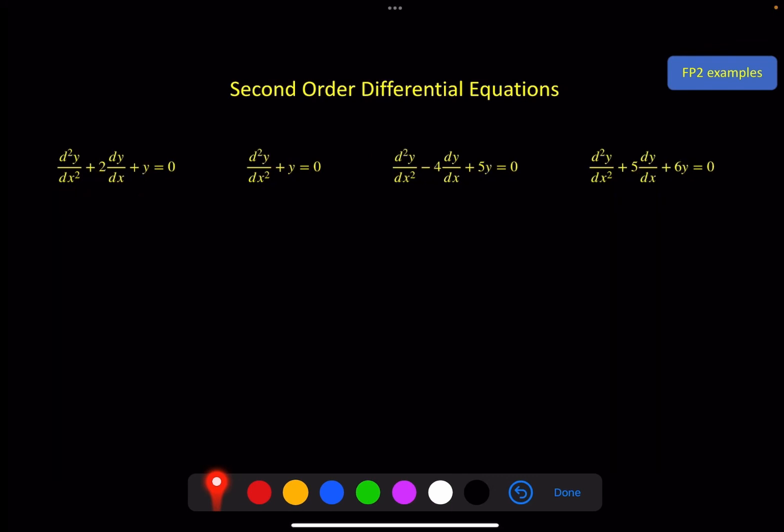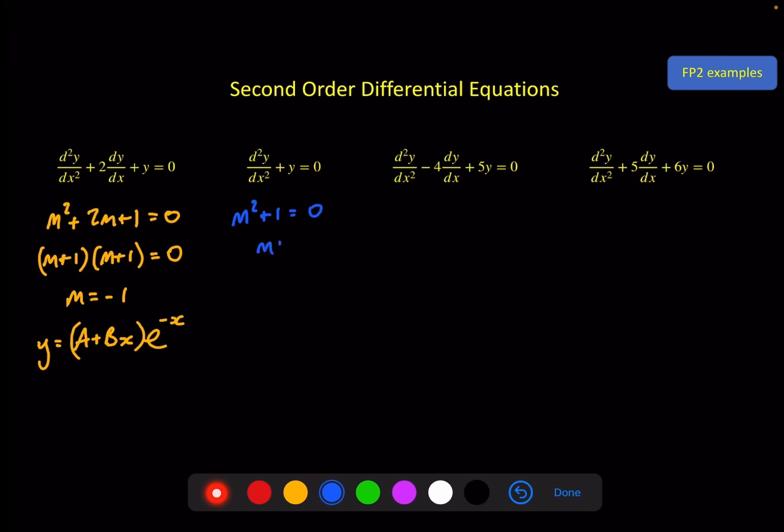Okay four more. m² + 2m + 1, that gives (m + 1)(m + 1) which is a repeated root, and that tells us that we need (A + Bx)e^(-x). Here we've got m² + 1, so m is equal to ± i, which is similar to the last one on the previous screen. We've got e^(0x) that's just a 1 times (A cos x + B sin x).